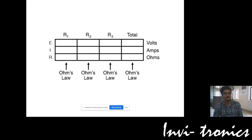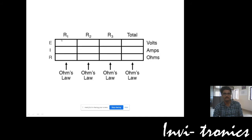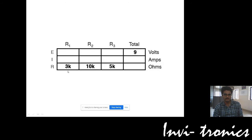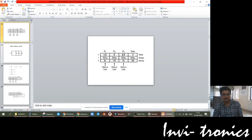Similarly, we need to do a simple parallel circuit also. Here we have 3 kilo ohms, 10 kilo ohms, and 5 kilo ohms. In a series circuit, the current will remain the same all over the circuit, whereas the voltage will be variable. The sum of the voltage drops will equal 9 volts — 5 plus 2.5 plus 1.5 will be 9 volts.